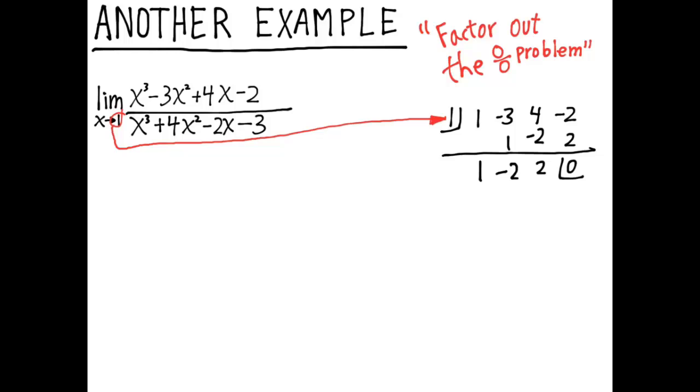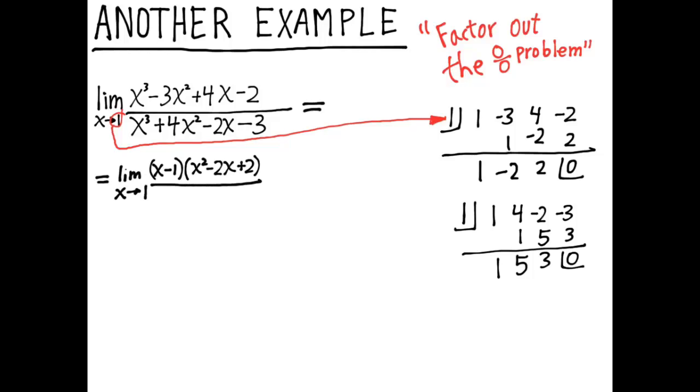So I'm going to use synthetic division to divide by x minus 1. And that's as much work as it takes to factor these polynomials. So my numerator becomes x minus 1 times x squared minus 2x plus 2, and the denominator becomes x minus 1 times x squared plus 5x plus 3 from the result of the synthetic divisions.